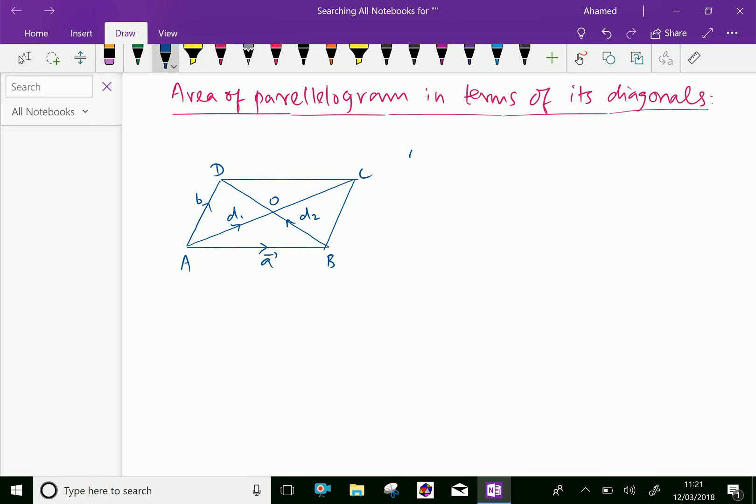Now, let AC is diagonal 1 and BD is diagonal 2. Let vector AB equal vector A given and vector AD is vector B. Also, we can say vector AC equal vector D1 and vector BD is equal vector D2.